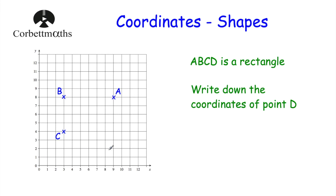So here we've got a typical question. We've got a grid and we've got three points: the point A, the point B, and the point C. And we're told that A, B, C, D is a rectangle, so there's another point D and it would complete a rectangle. We've been asked to write down the coordinates of the point D, so we need to consider where D would be on this grid to make A, B, C, D a rectangle. Remember with a rectangle that the opposite sides are the same length.